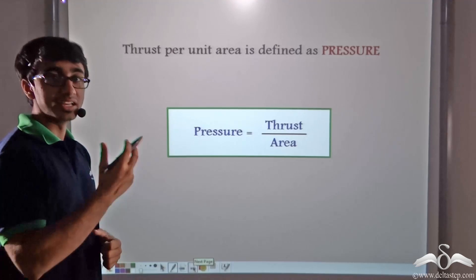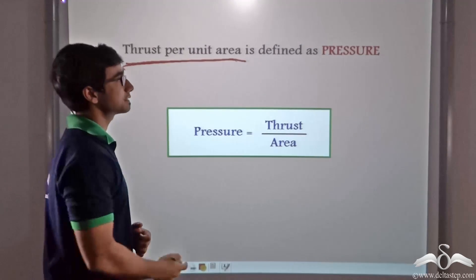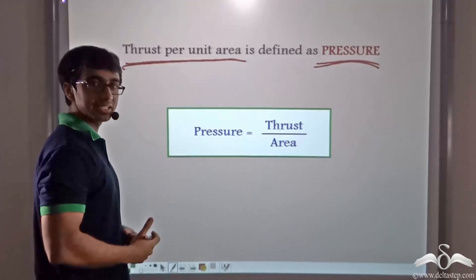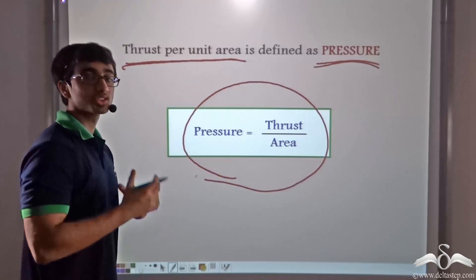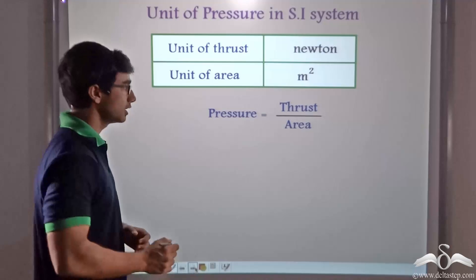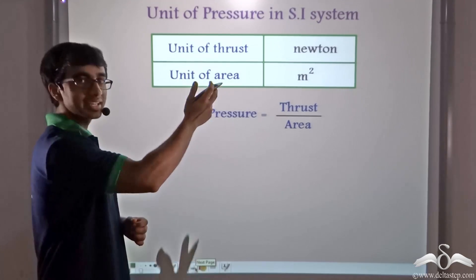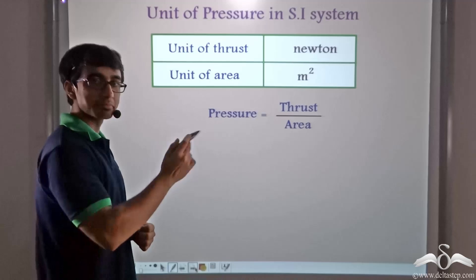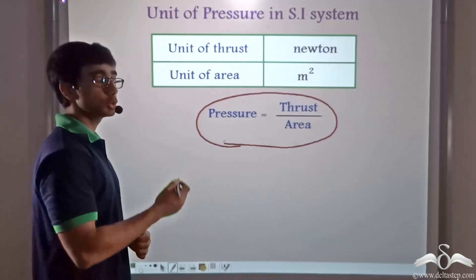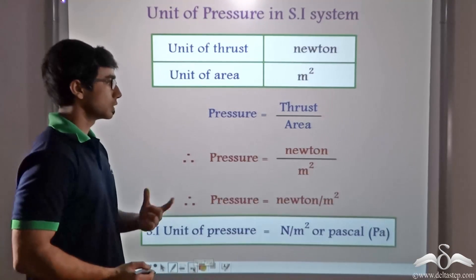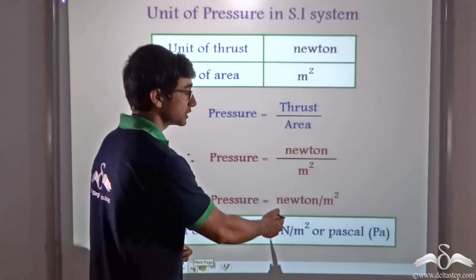Now thrust per unit area has a particular name — it is commonly known in scientific terms as pressure. Pressure is mathematically defined as thrust divided by area. So to find the SI unit of pressure: the SI unit of thrust is Newton and the unit of area is meter squared. Therefore, the SI unit of pressure is Newton per meter squared.